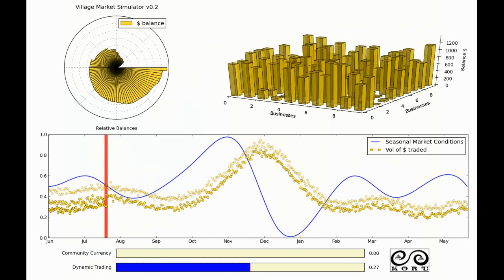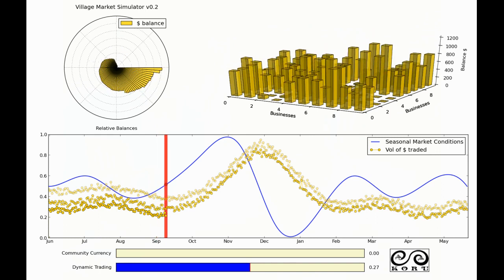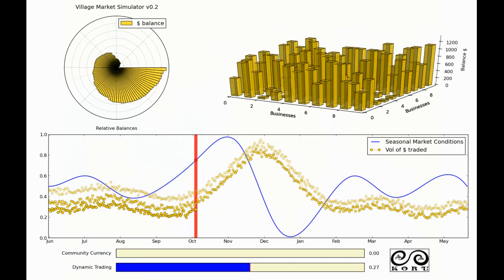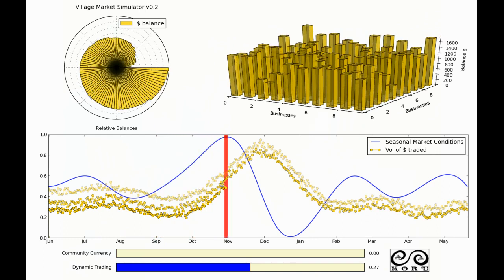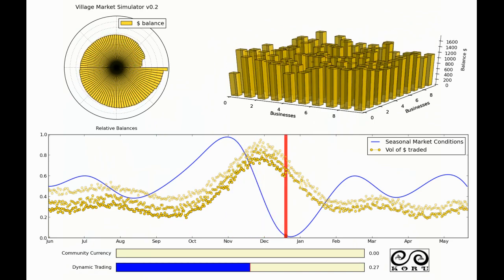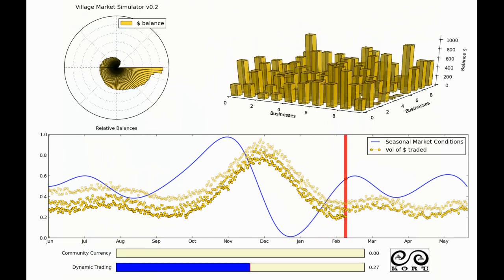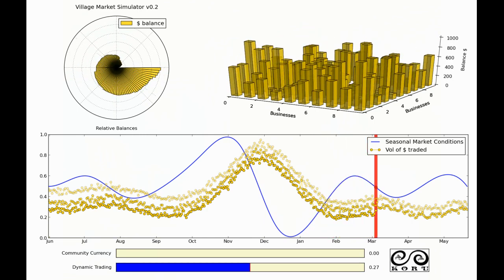So as time goes on we can see in yellow plotted here the relative amount of trade throughout the year. So as there's more money in the system people trade a bit more, and as there's less money in the system people trade a bit less. And the net effect over the entire year is that by the end of the year there's a little bit less money in the system than we started with.